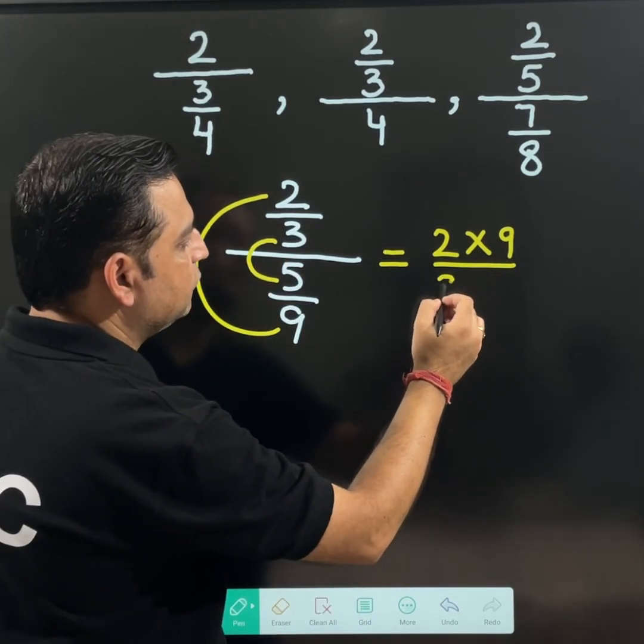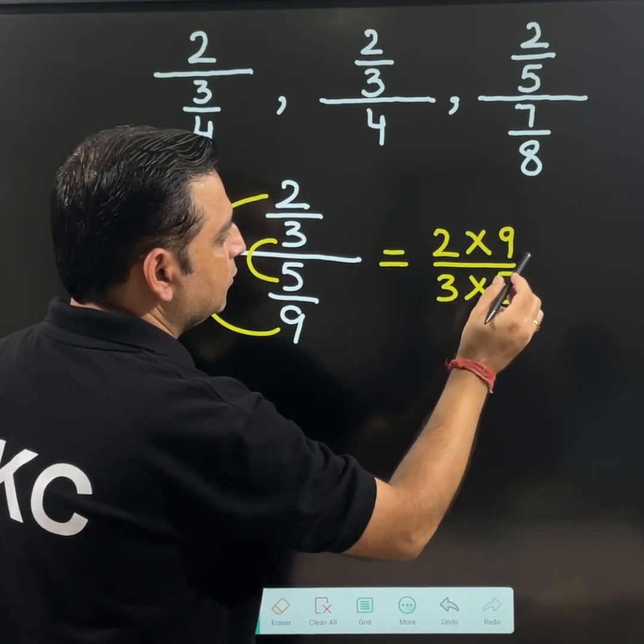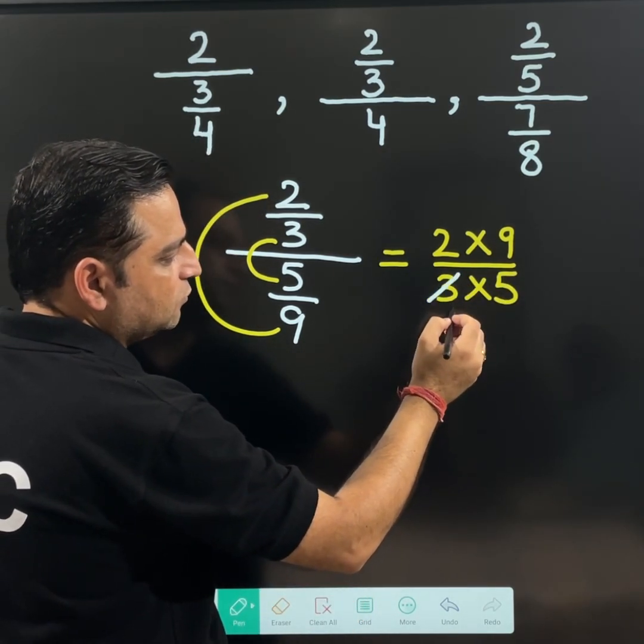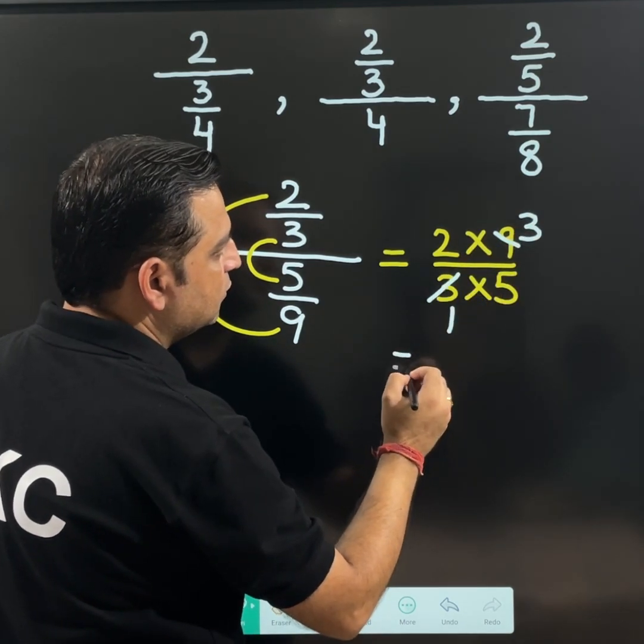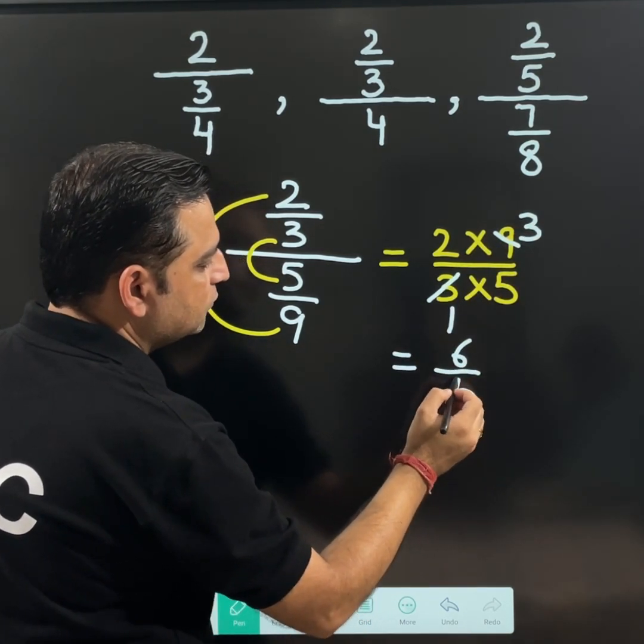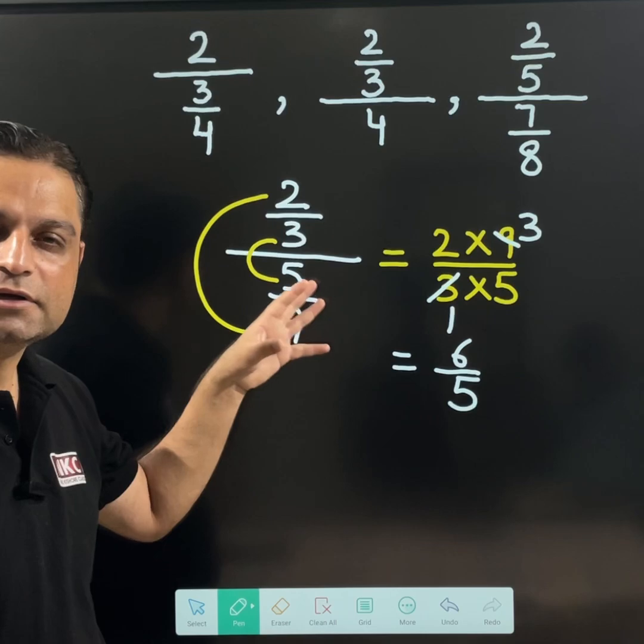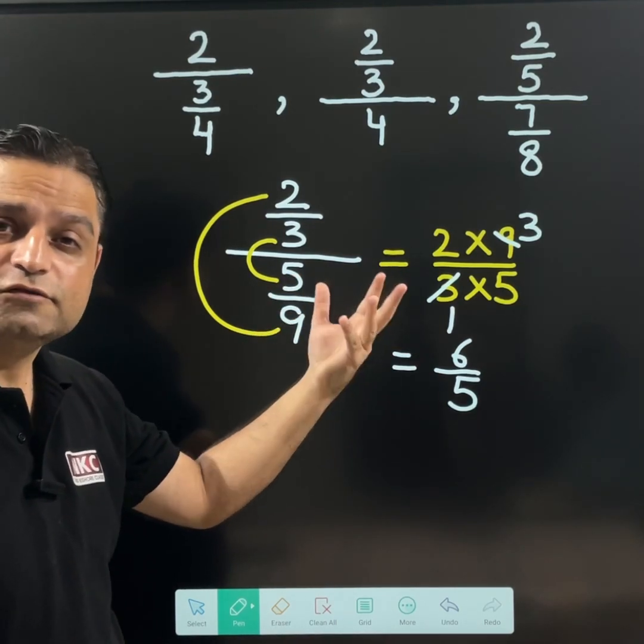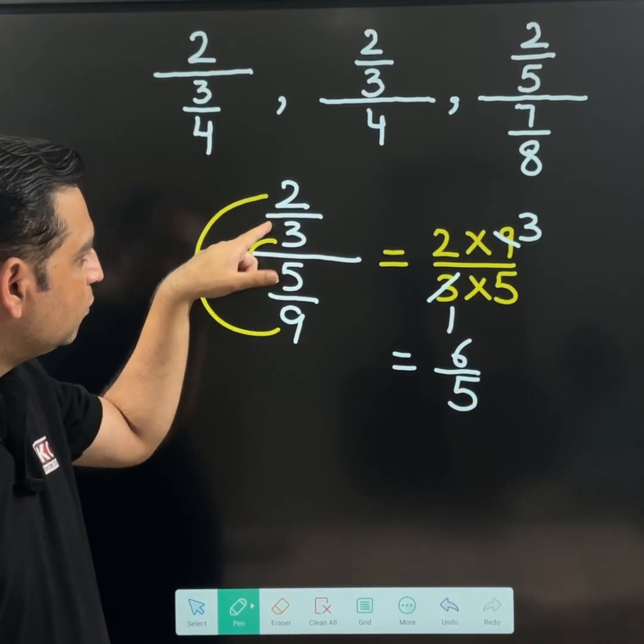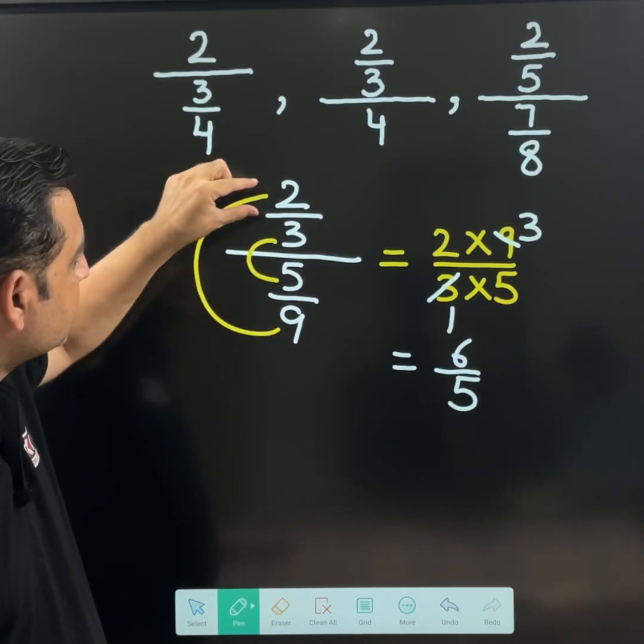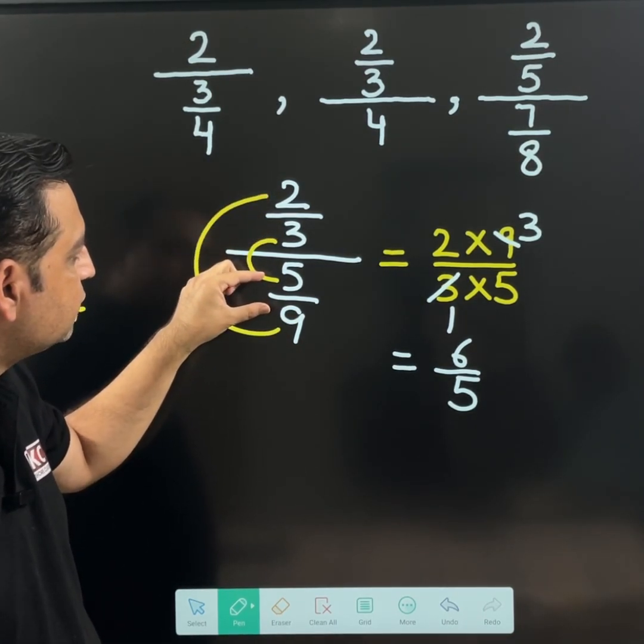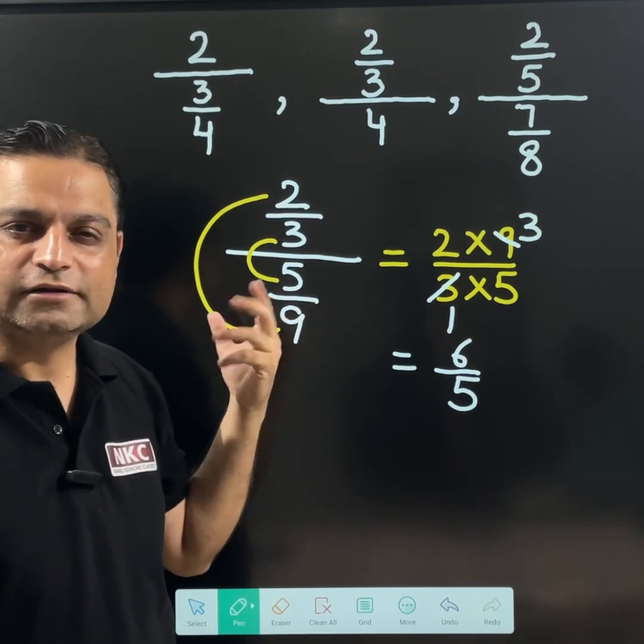You can reduce it to the lowest form also. 3 times 1 is 3, 3 times 3 is 9. So its final answer is 6 over 5 after simplification. And this is the topic where students face problem. I hope this last case is clear. Where numerator is a fraction, denominator is a fraction, you can just do it like this.